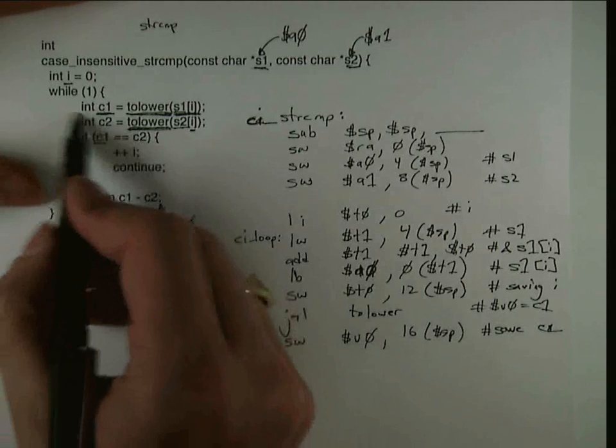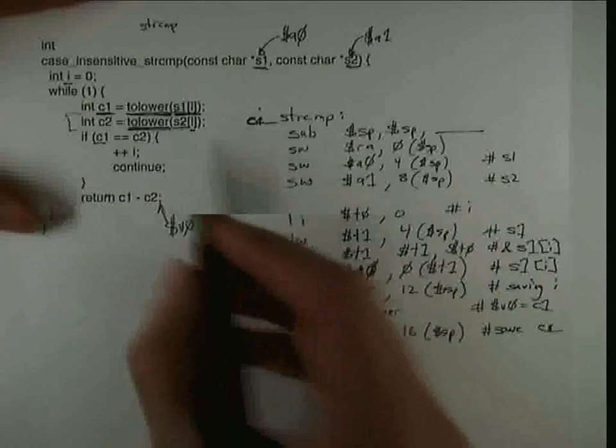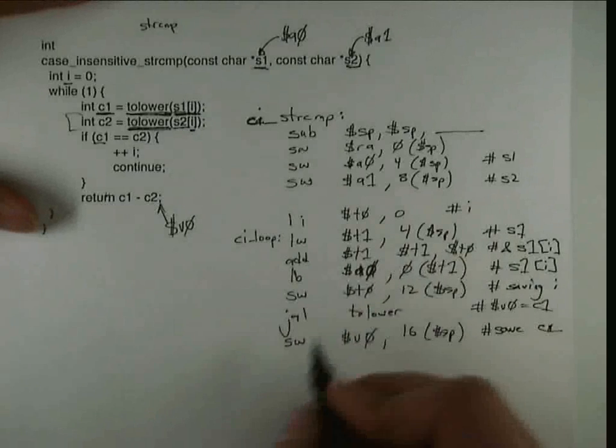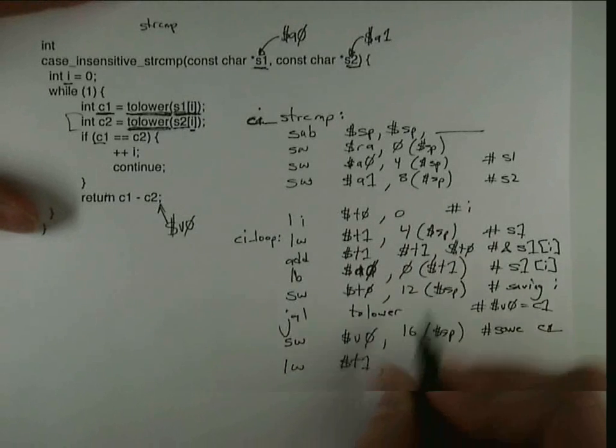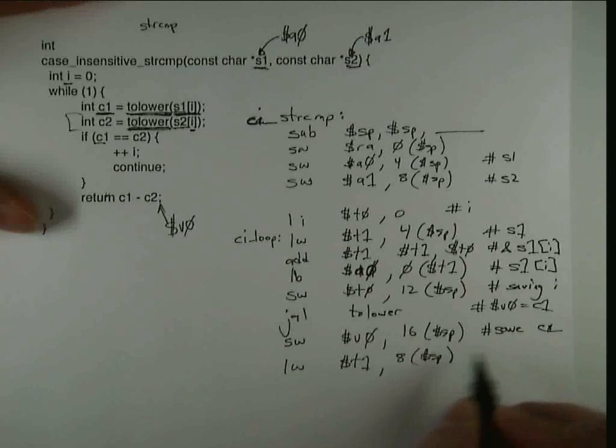Now I can work on the second call to tolower. I'm going to basically do the same thing. I'm going to load S2 into T1. So S2 is at the 8 offset of the stack pointer. That gives me S2.